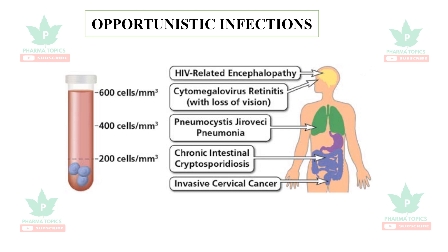Other opportunistic infections include Pneumocystis jirovecii pneumonia, which affects the lungs, chronic intestinal cryptosporidiosis, which affects the intestine, and invasive cervical cancer. All these conditions occur after a few years of infection.